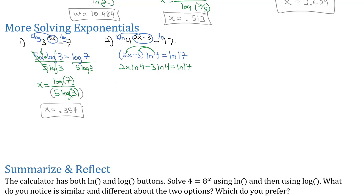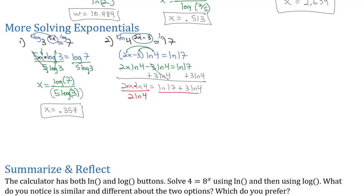That might look weird having those natural logs in there with the x's, but don't lose track of what we're doing — we're trying to solve for x. In problems where we've got x with plus and minus and multiplication, we have to get the x term alone by adding 3 natural log of 4 to both sides. That isolates the term with x, so we have 2x natural log of 4 equals the natural log of 17 plus 3 natural log of 4. We can't combine those natural logs on the right side — just leave them. The x is multiplied by both the 2 and the natural log of 4, so we'll divide off both the 2 and the natural log of 4 on both sides.